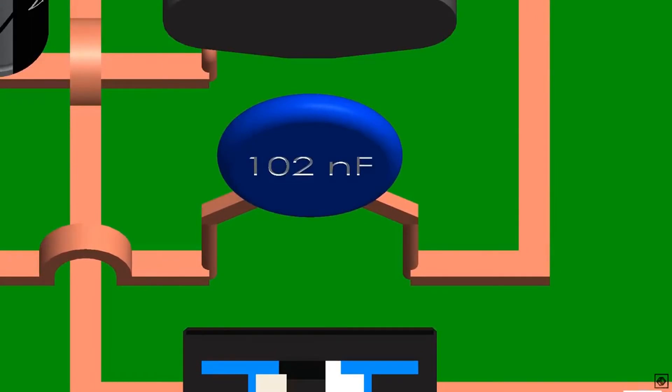This capacitor is 102 nanofarad, used for safety purposes. It is connected between primary and secondary grounds to stop electromagnetic interference.